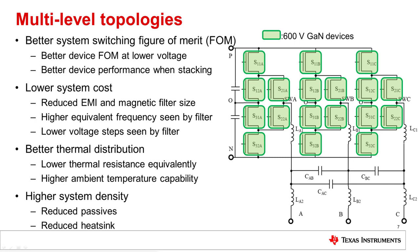Multi-level topologies provide many advantages by reducing the voltage that is switched. Lower voltage power devices have a better switching figure of merit (FOM) than higher voltage devices. Therefore, a 600-volt GaN device will have lower switching loss than a 1,200-volt silicon carbide MOSFET when switching at the same voltage. The reduced switching losses allow the switching frequency to be increased while maintaining high efficiency. The higher switching frequency and lower switching voltage reduces the volt-seconds seen by the magnetics, allowing significant reduction in size and cost of the power inductor and EMI filter to improve power density.